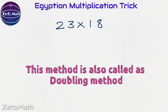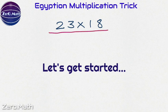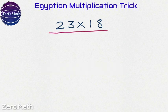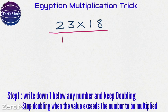So let's multiply 23 into 18 using this method. Step one in this method is to write down number 1 below any of the numbers. Let's write it below number 23 and keep doubling this number. Now you must stop doubling when the number exceeds the value of the number itself, which is number 23.